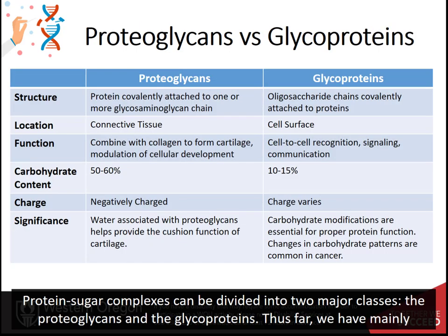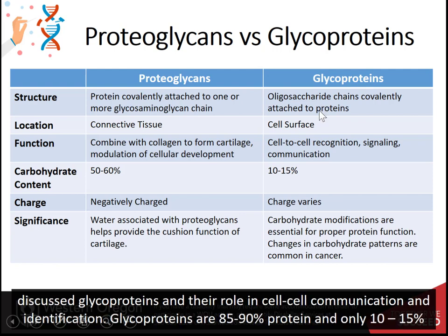Protein-sugar complexes can be divided into two major classes: the proteoglycans and the glycoproteins. Thus far, we have mainly been discussing glycoproteins and their role in cell-cell communication and identification. Glycoproteins are 85-90% protein and only 10-15% carbohydrate.